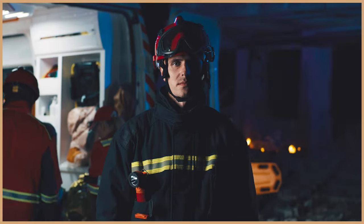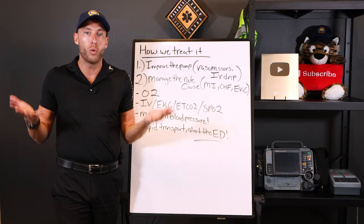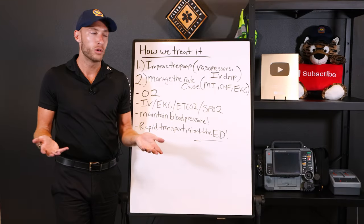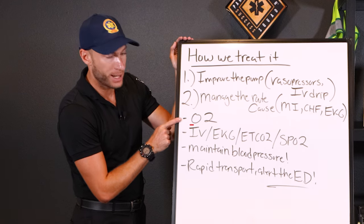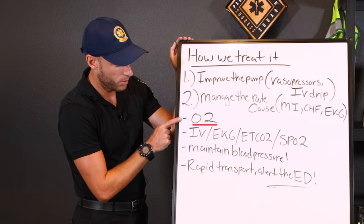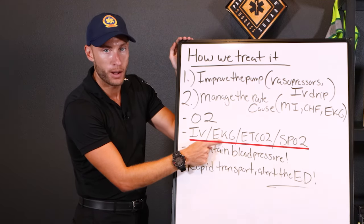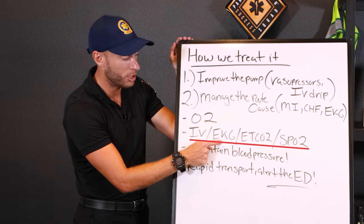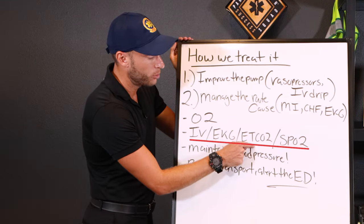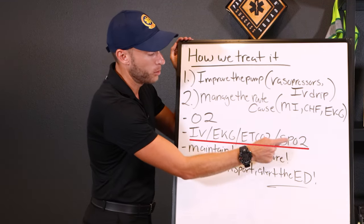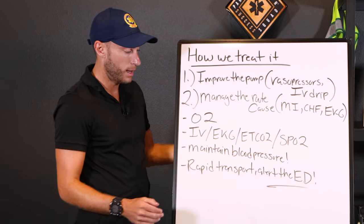If you suspect cardiogenic shock in your ambulance, here's what you do first. We're going to give oxygen, start an IV, and do cardiac monitoring — get a 12-lead EKG. We're going to do end-tidal CO2 monitoring and SpO2 monitoring. Those are all the basics.